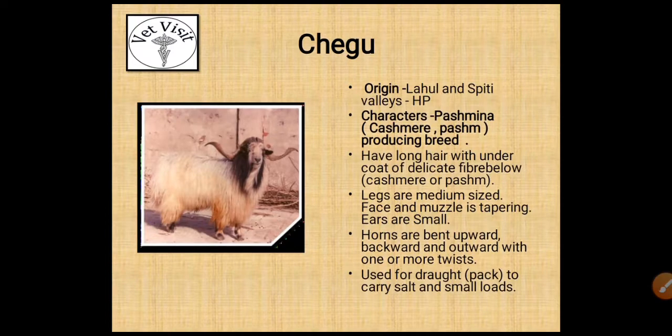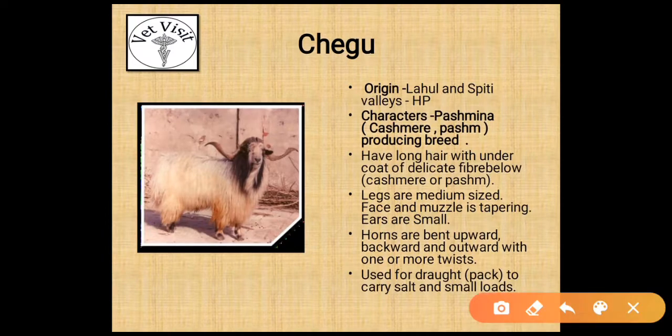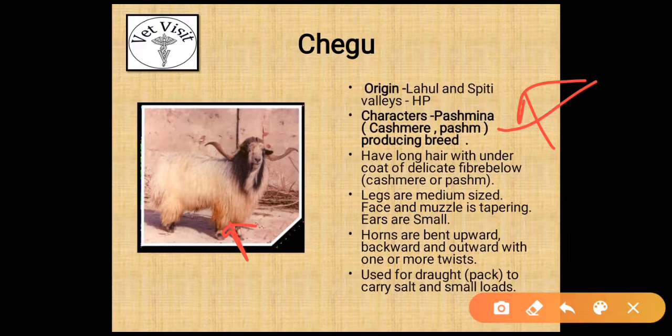The next breed is Chigu. Its origin is Lahul Spiti Valley of Himachal Pradesh. Characters: Pashmina producing breed. They have long hair with an undercoat of delicate fiber. Fiber below the legs; medium size face and muscles; ears are small; horns are bent upwards.